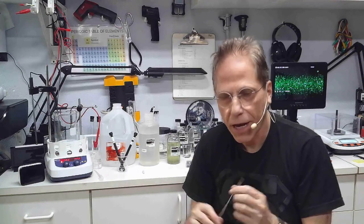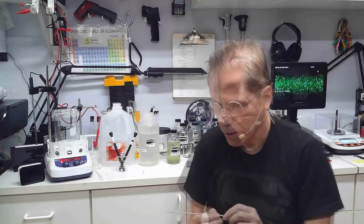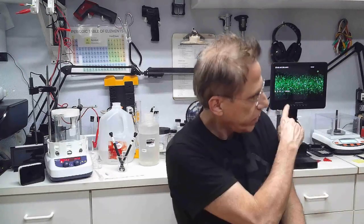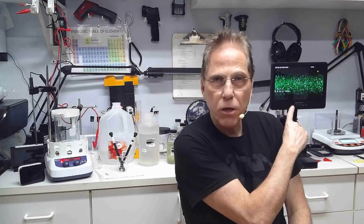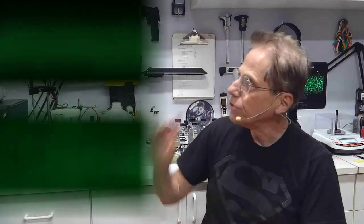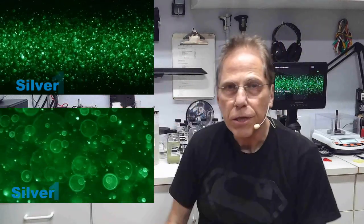So that's the difference between ionic and colloidal. What does a colloidal look like in the microscope? That is a 12 parts per million colloidal silver solution under the video microscope.